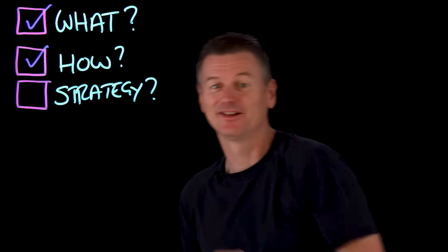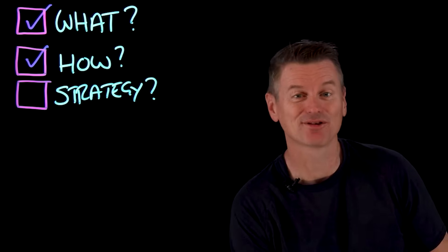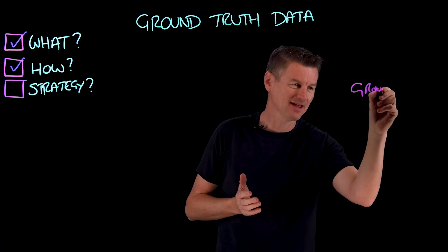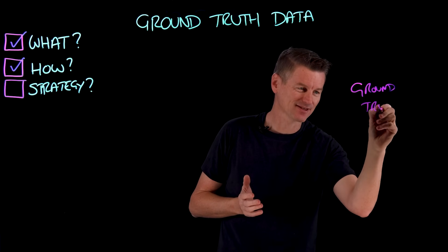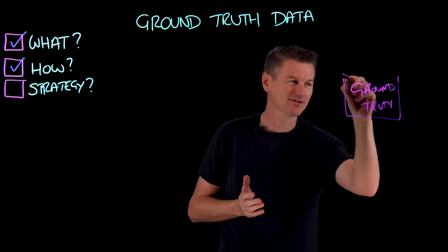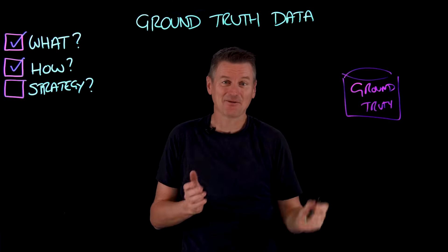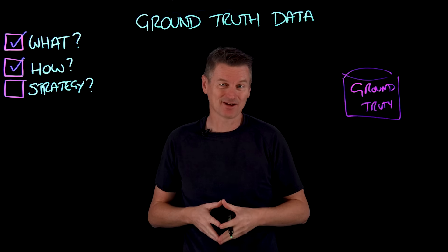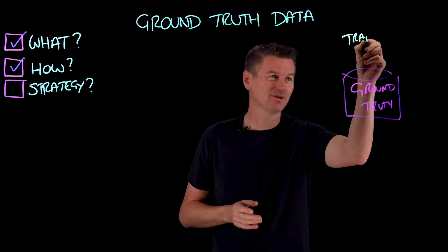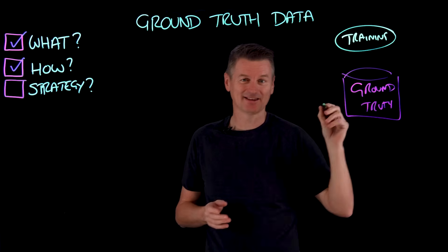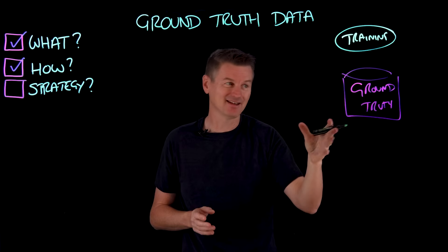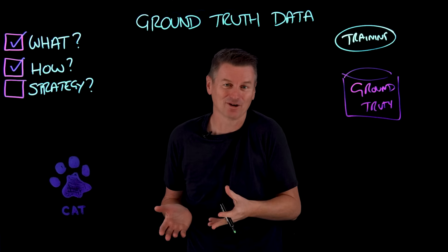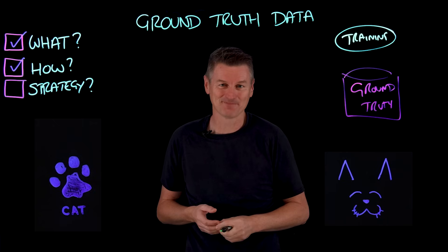So how does supervised learning make use of ground truth data? We can put this into a bit of a diagram. Let's start with some ground truth data in a data set. This ground truth data is actually used throughout the machine learning lifecycle. Looking at the different stages, we start with the model training stage. The ground truth data provides the correct answers for the model to learn from — here's what a cat's paw looks like, here's what cat ears look like, and so forth. That's training.